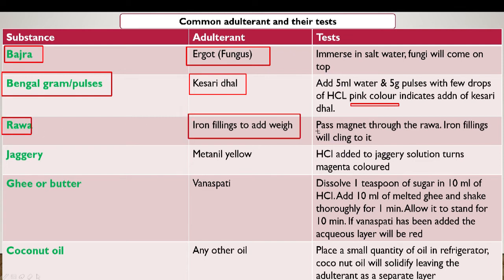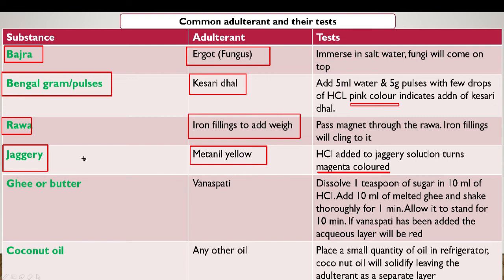In rava, iron filings can be added to gain weight. This can be tested by passing a magnet through the rava — the filings will cling to it. In jaggery, metanil yellow, which is a non-permitted color, is added and is highly carcinogenic. To test it, add HCl to the jaggery solution — a magenta color indicates the presence of metanil yellow.